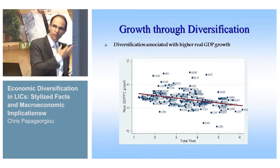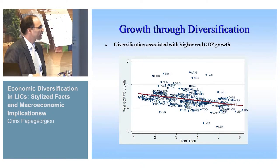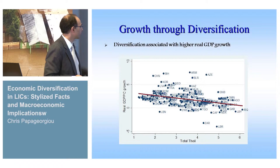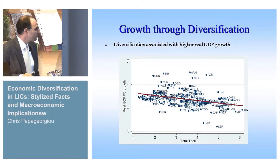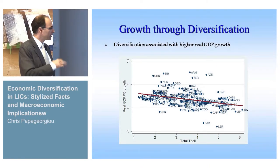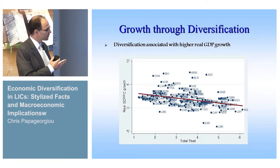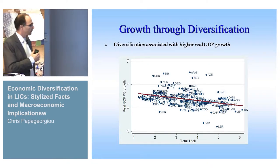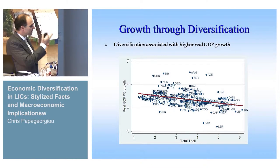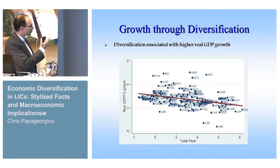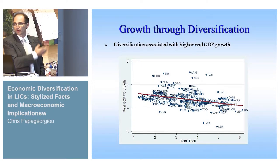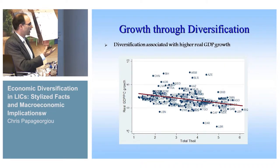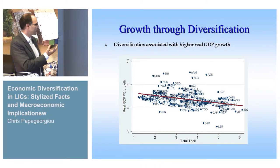Here I will show you a couple of cross-country figures. On the vertical axis we have real GDP growth, and on the horizontal axis we have our index of diversification. As we increase this index of diversification, we have more concentration. This tells you that as countries become more concentrated, there is lower growth — so there is a positive relationship between diversification and growth.